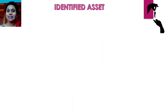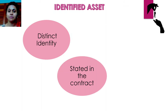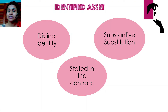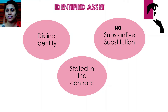For an underlying asset to be considered an identified asset, there are three important criteria. One, it should have a distinct identity. Second, it should be clearly stated in the contract. And third, the supplier should have no substantive substitution rights — meaning the supplier should not be able to substitute the asset as and when he or she likes.